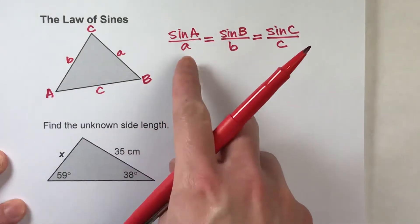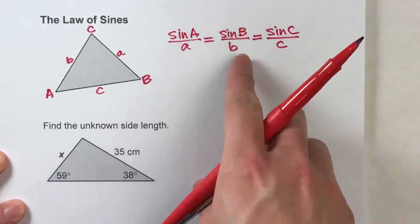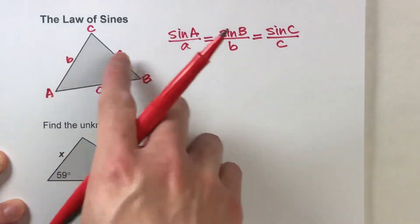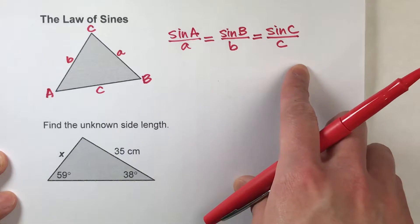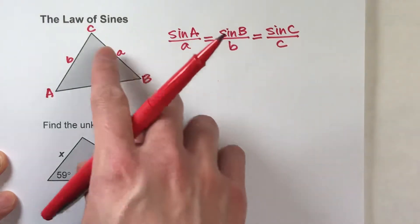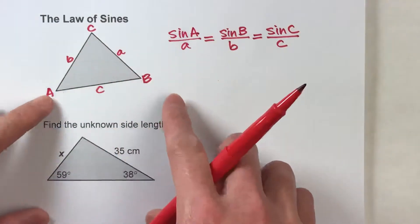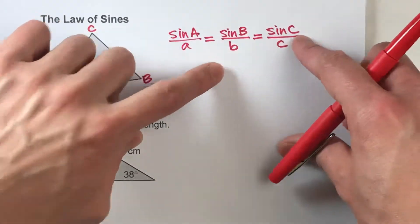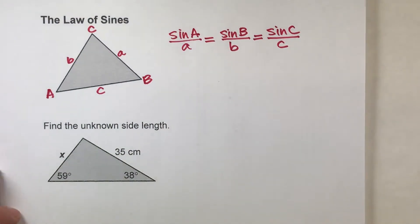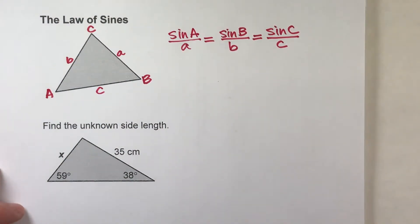So really with the law of sines, it's very flexible in that it can use any of the angles and any of the side lengths, and all of these ratios are equal. So if you're working with three out of the four of any of these combinations, you can set up an equation and solve for the missing measure.